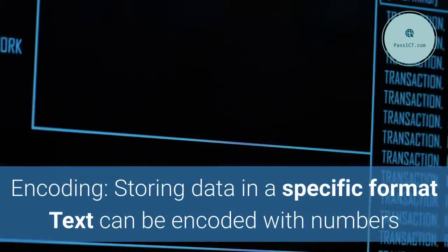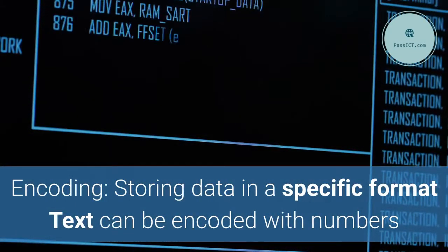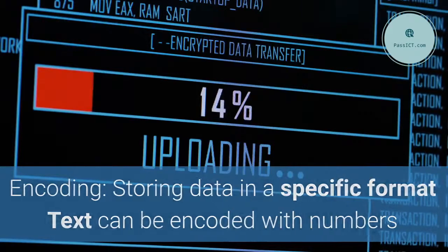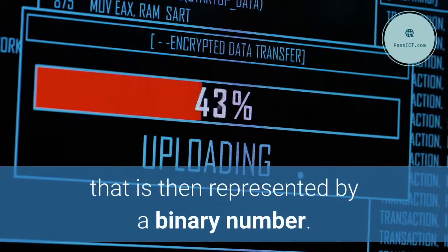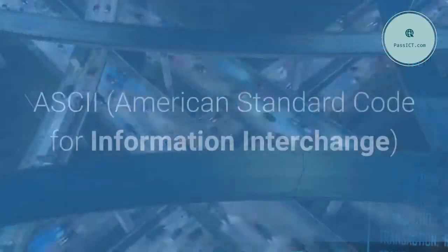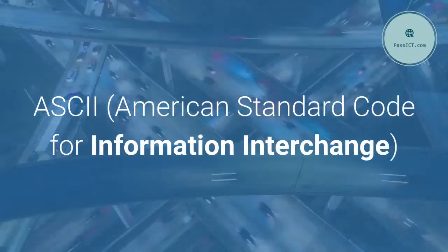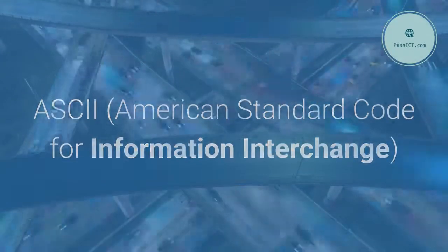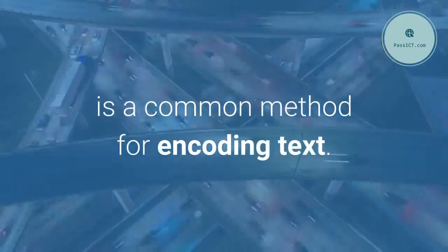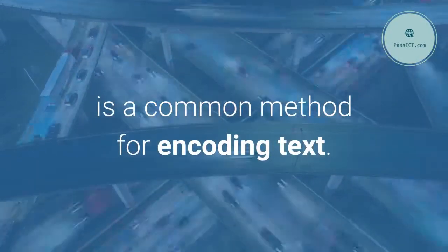Encoding: storing data in a specific format. Text can be encoded with numbers that are then represented by a binary number. ASCII (American Standard Code for Information Interchange) is a common method for encoding text.